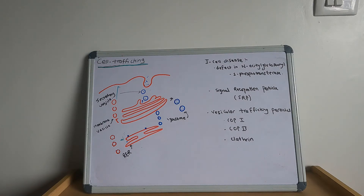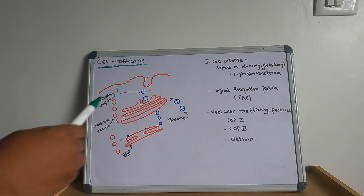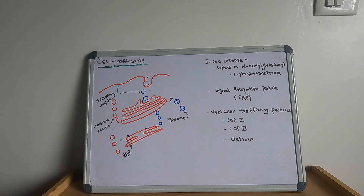The secretory and storage vesicles are usually clathrin-coated, while the membrane vesicles are non-clathrin coated. The formation of the clathrin coat is the mechanism by which these vesicles are pinched off from the Golgi body at the trans face.